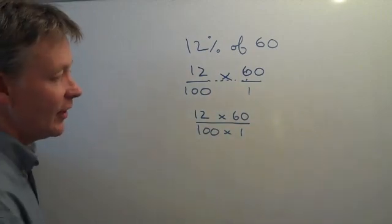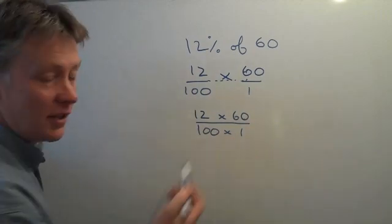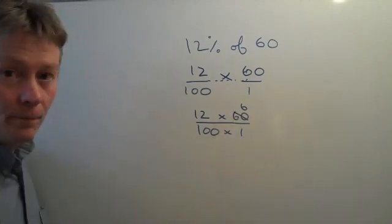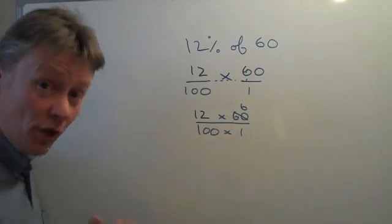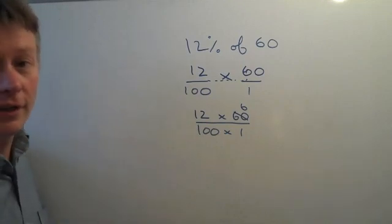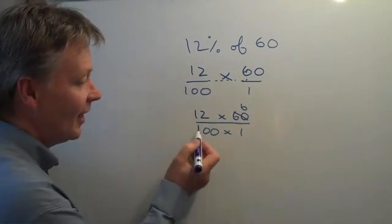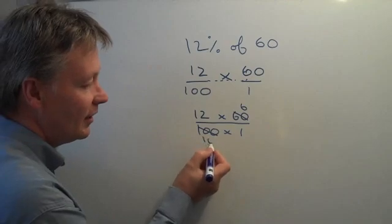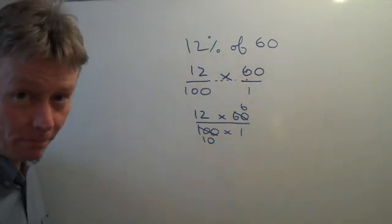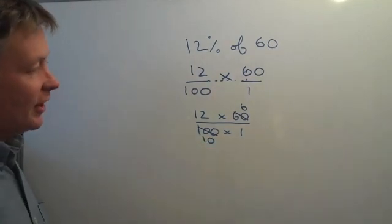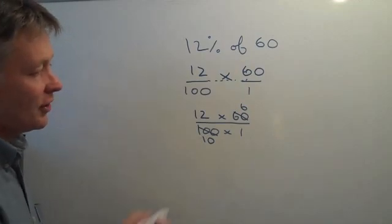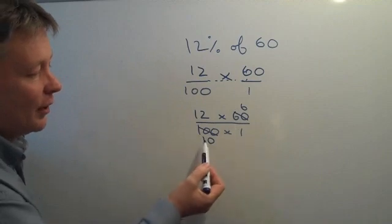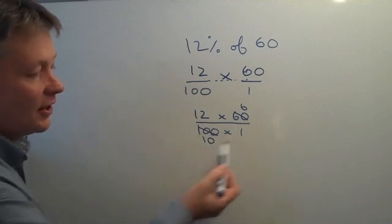Now if I do that, I can divide that 60 by 10 and it becomes 6. But because I've divided the top by 10, I have to divide the bottom by 10 as well. That 100 divided by 10 becomes 10. So I now have a fraction which looks like 12 times 6, divided by 10 times 1.